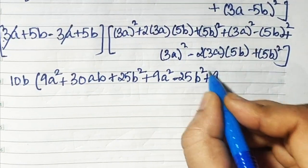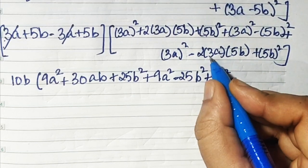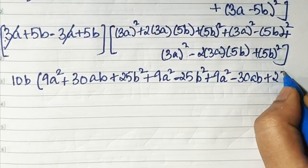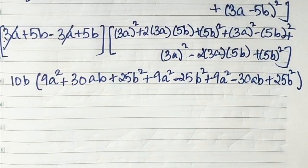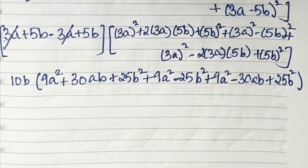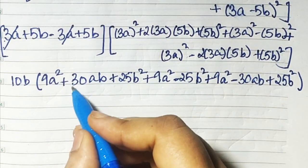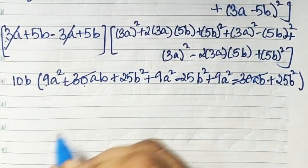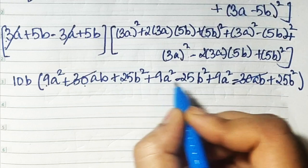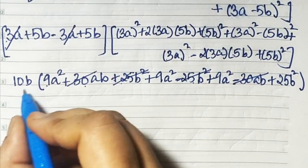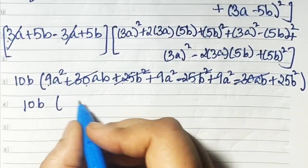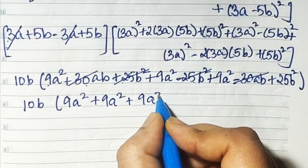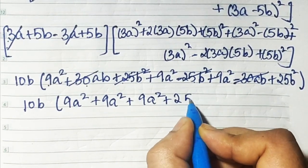Plus 9a square minus 30ab plus 25b square. Now cancellations: plus 30ab and minus 30ab cancel, and plus 25b square and minus 25b square cancel. What remains inside: 9a square plus 9a square plus 9a square gives 27a square, plus 25b square.